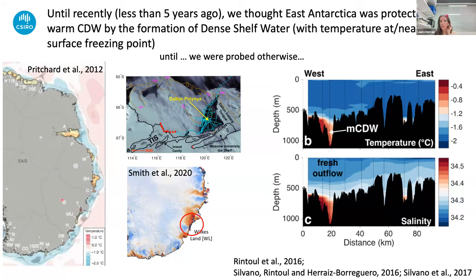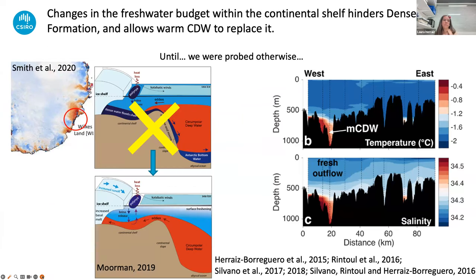What we've found is that not everywhere in East Antarctica, even though there are coastal polynyas, is dense shelf water being formed. But there are regions within the East Antarctic margins where the properties of the water on the continental shelf actually reflect more of the processes we know occur in West Antarctica. For the rest of the talk, I'll focus on two regions: near the Shackleton ice shelf, and in Vincennes Bay, just in front of the Vanderford Glacier.